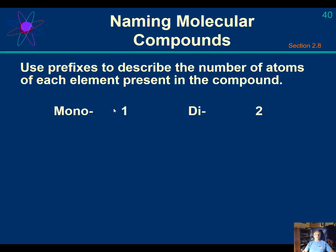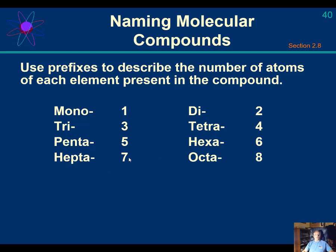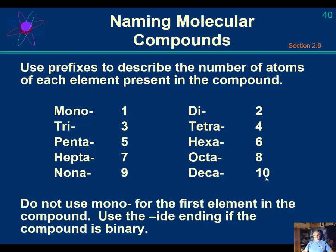You have to learn the prefixes: mono equals one, di is two, tri is three, tetra is four, penta is five, hexa is six, hepta is seven, octa is eight, nona is nine, and deca is ten. Memory tricks: a triangle has three sides, a tricycle has three wheels; the Pentagon has five sides; an octopus has eight arms; a decade has ten years; Tetris uses four-sided squares. Hexa is six.